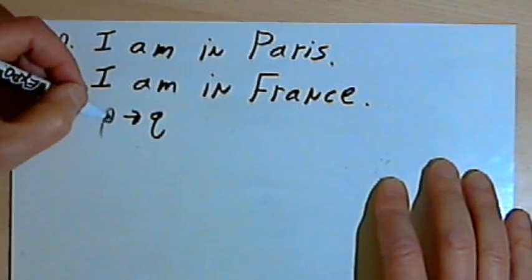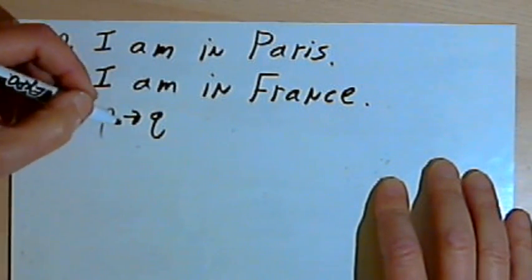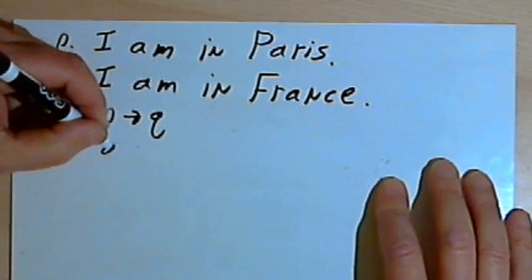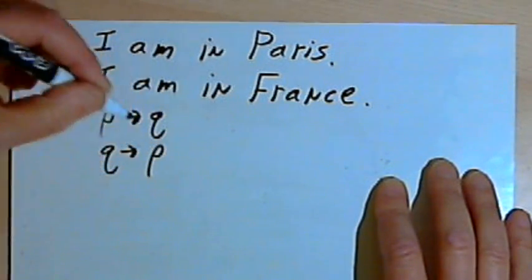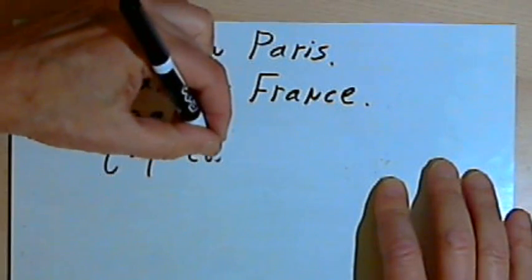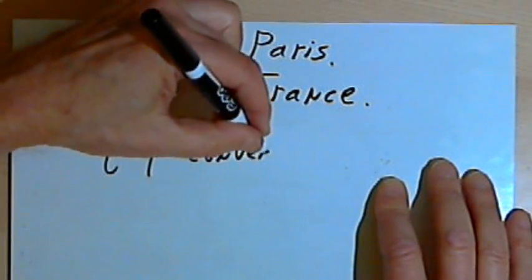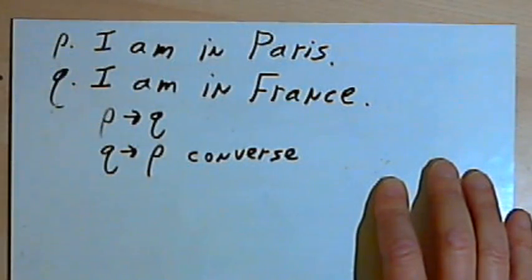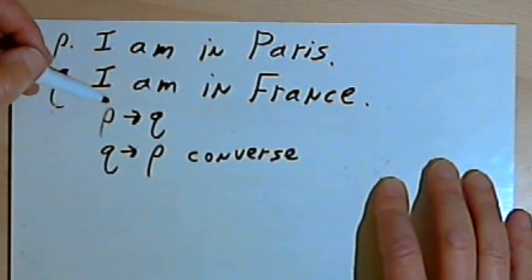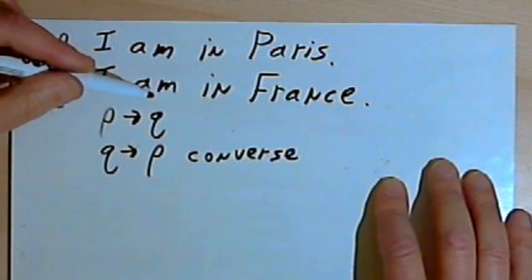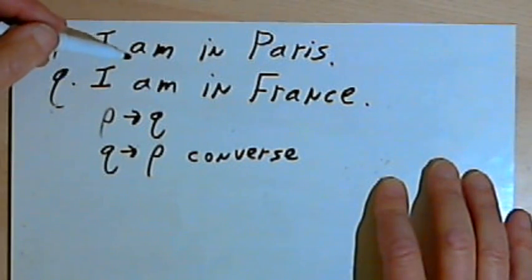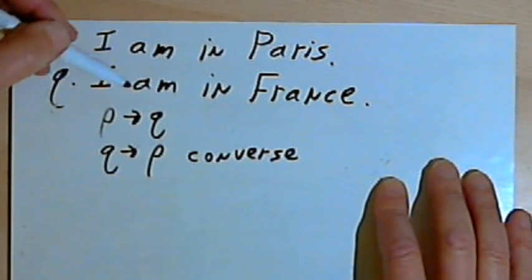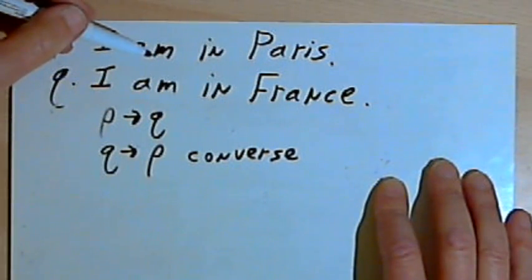We could also take this conditional statement and rearrange the letters. I could turn this into if Q, then P. This is called a converse of the original statement, and I would read this as if I am in France, then I am in Paris. Now obviously this is not necessarily true. There's a lot of places I could be in France without being in Paris.